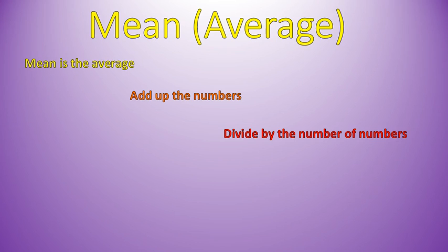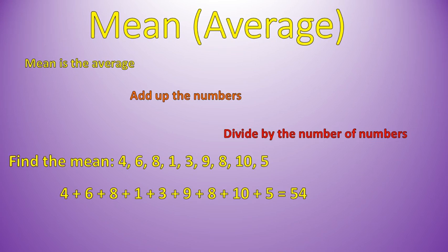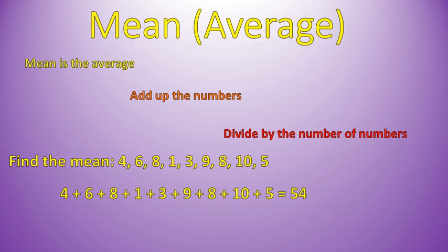So it'll look something like this. If you're asked to find the mean of this list of numbers — 4, 6, 8, 1, 3, 9, 8, 10, 5 — what you'll do is add up those numbers: 4 plus 6 plus 8 plus 1 plus 3 plus 9 plus 8 plus 10 plus 5, which gives you 54. And then you will divide by the number of numbers.